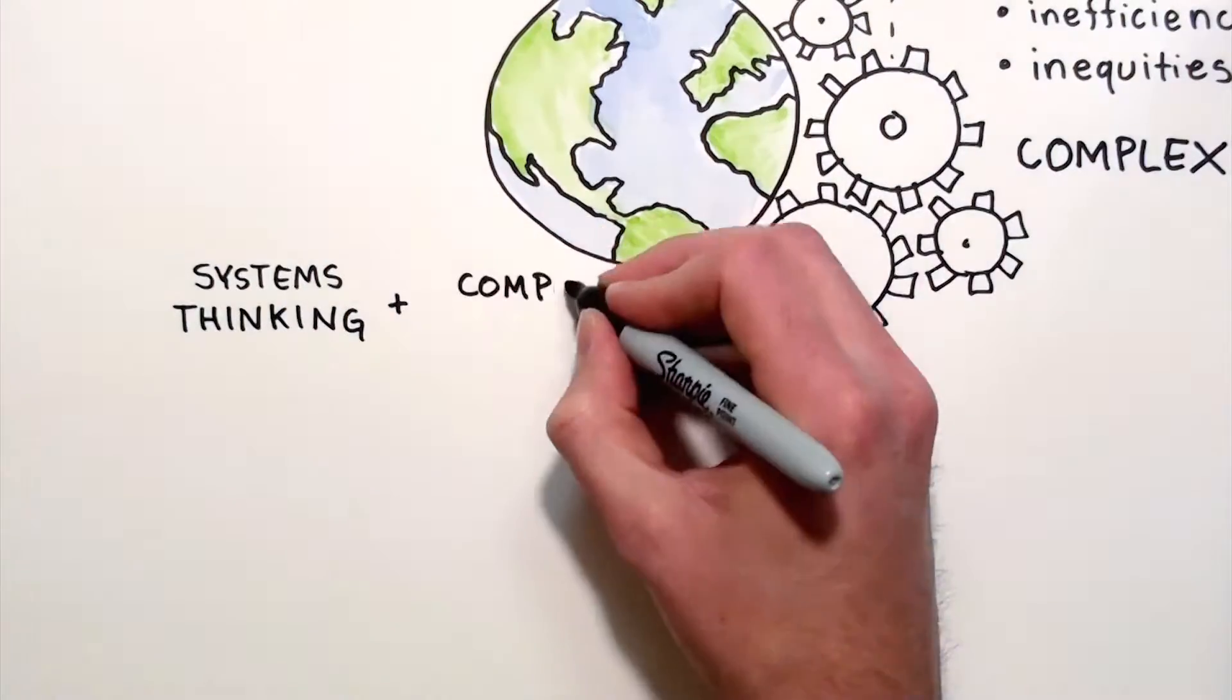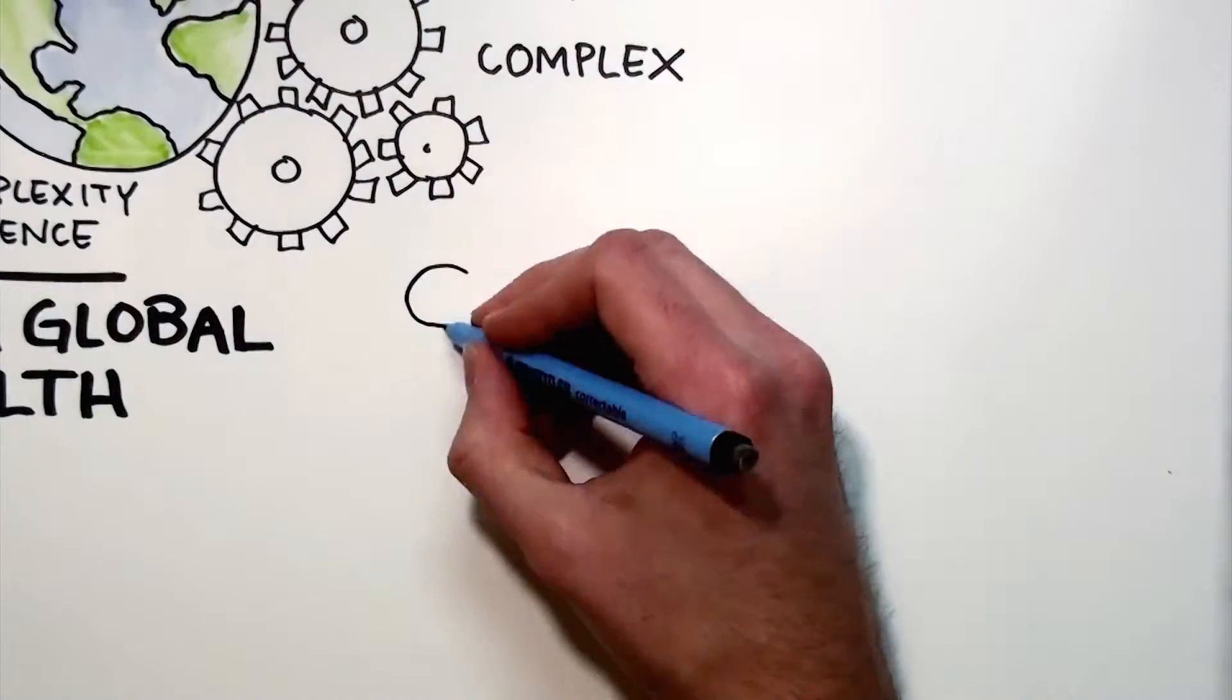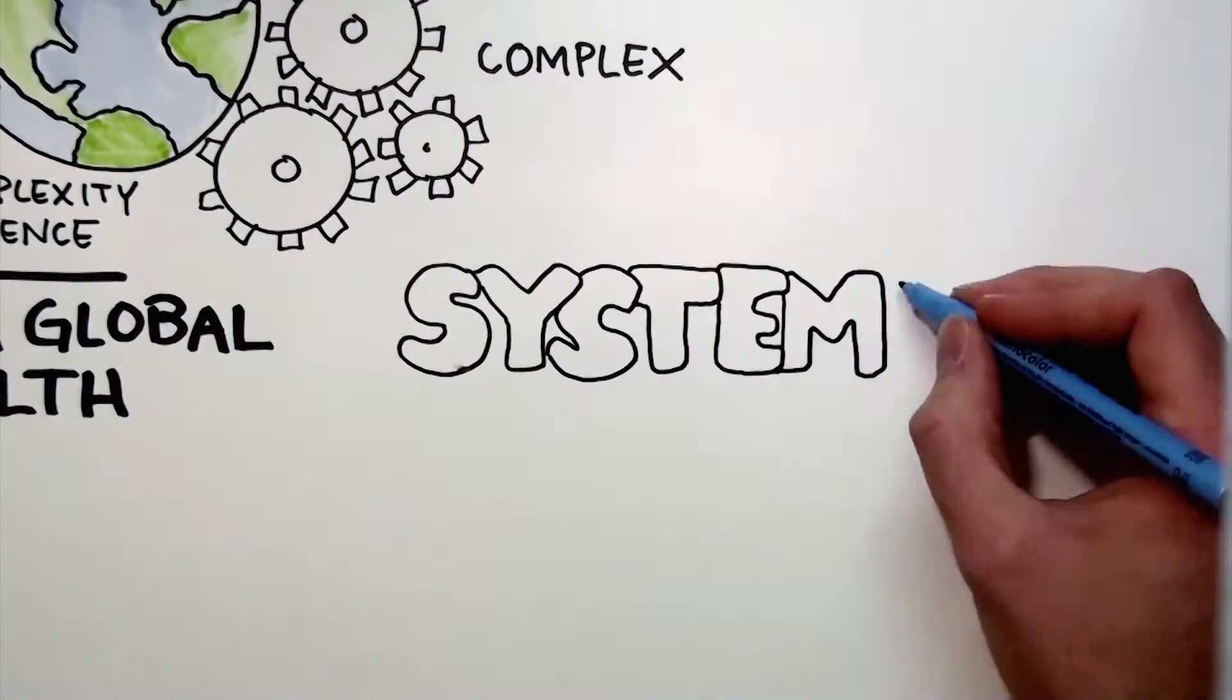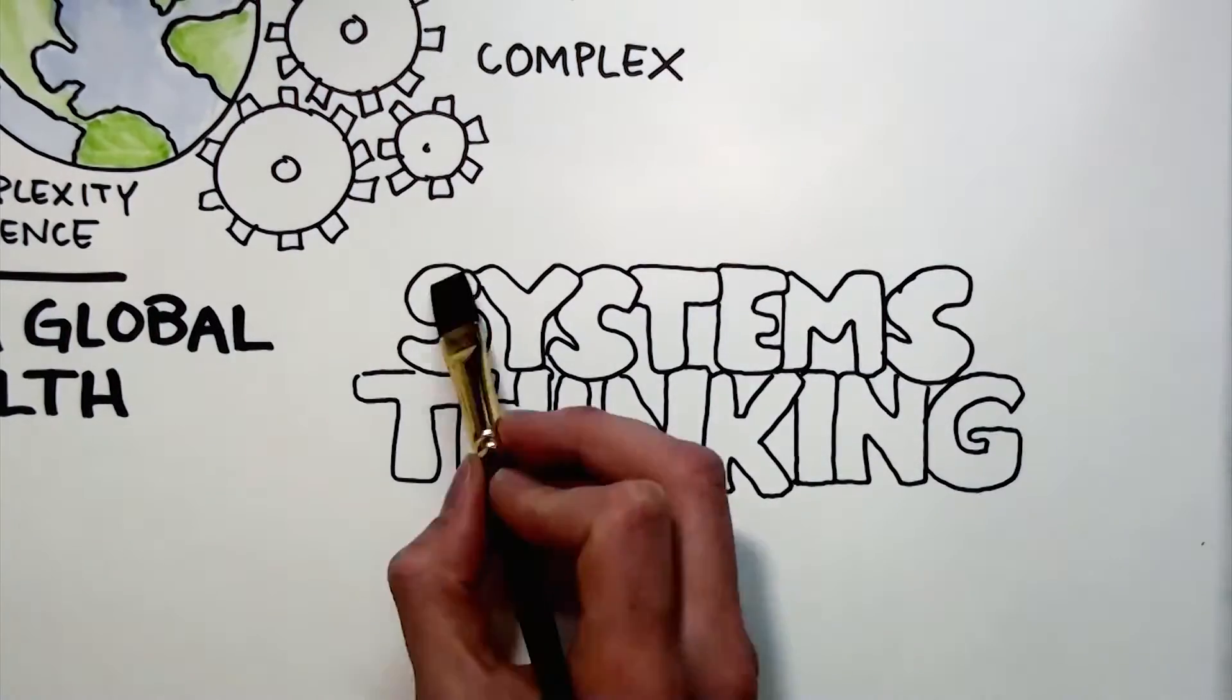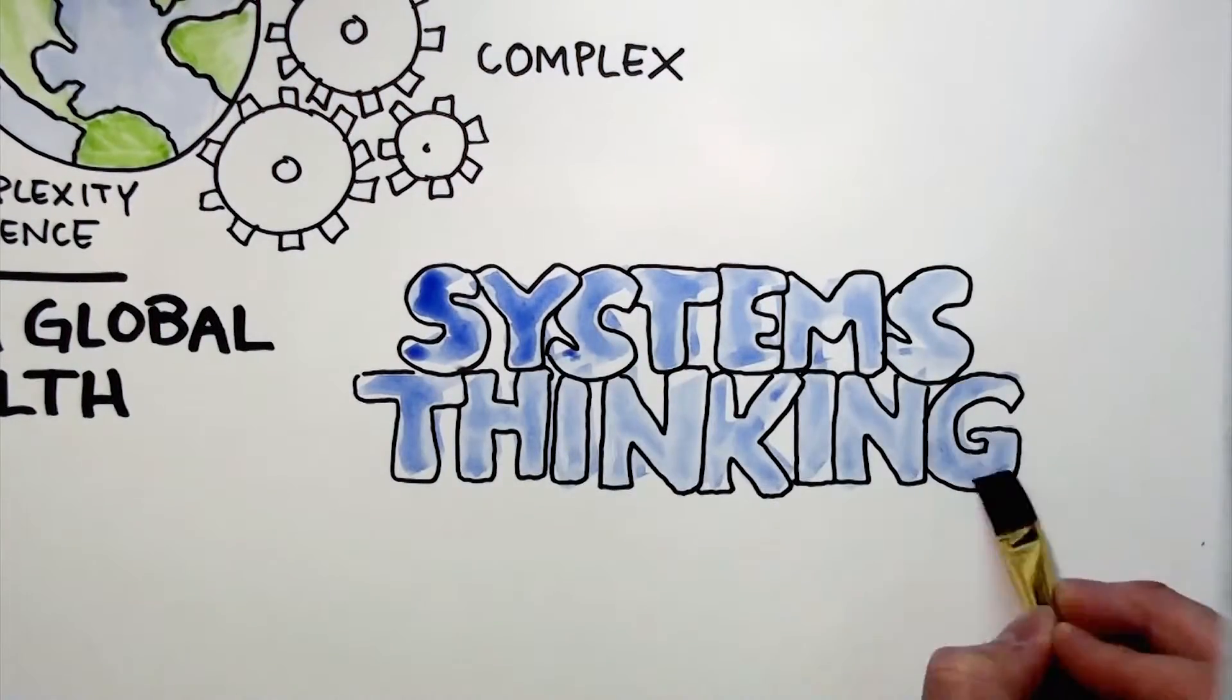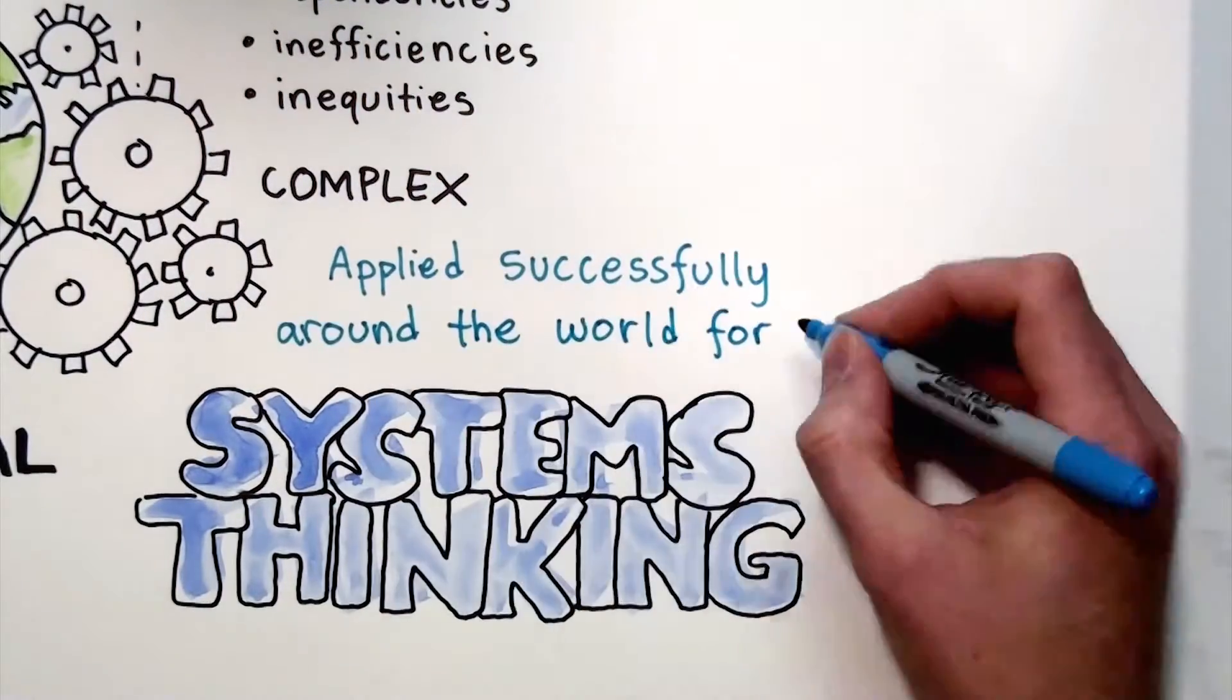Systems thinking and complexity science can transform global health by minimizing unintended consequences and by increasing local capacity and shared learning. The systems thinking approach isn't entirely new. It has been applied successfully around the world for decades.